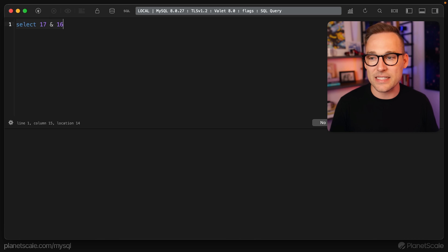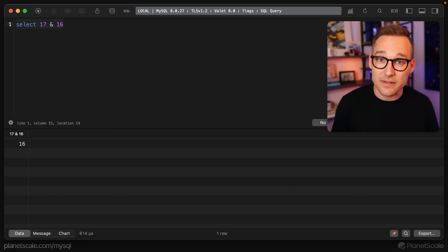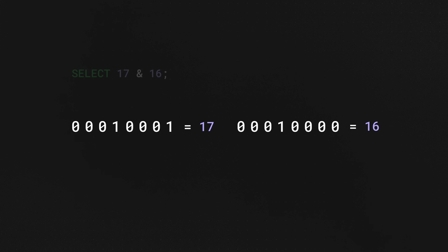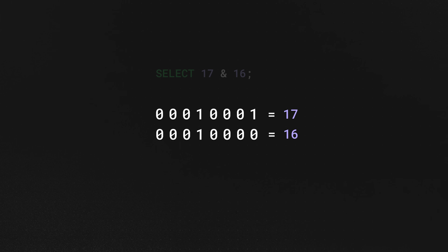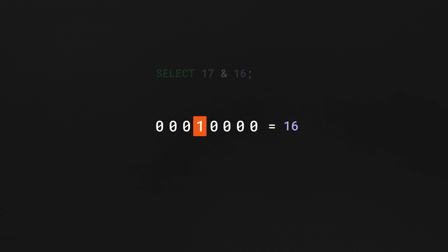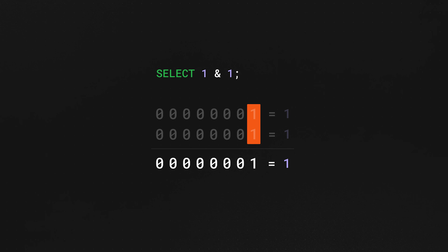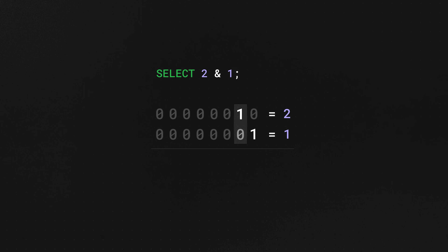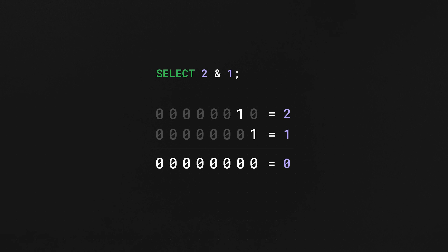That's pretty important knowledge about how integers are stored under the hood using bits and bytes. But the question remains: select 17 & 16 — what could that possibly mean? When we say select 17 & 16, we're using the bitwise AND operator. It's better if we turn these numbers into their bit representations. The bitwise AND operator tells us which bits are on in both sets. In this case, only the 16 bit is on in both sets, so a new number is constructed out of just those bits — just 16.